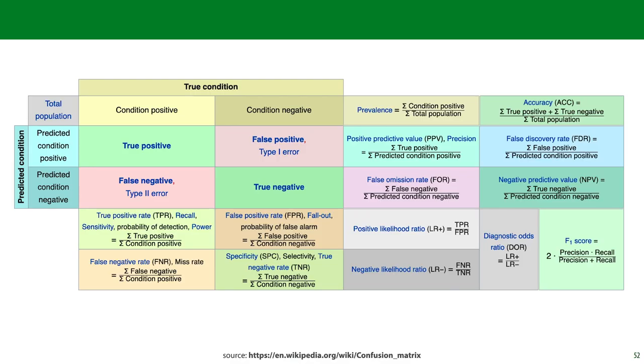There are many more metrics that can be computed from the confusion matrix. Wikipedia provides a helpful table in case you ever come across them. For most purposes, precision, recall, and accuracy are sufficient.